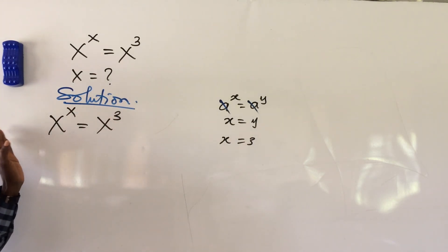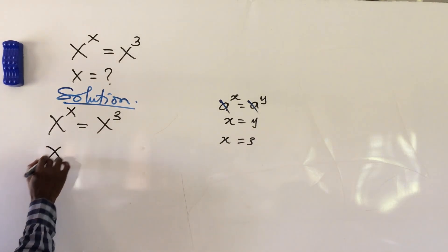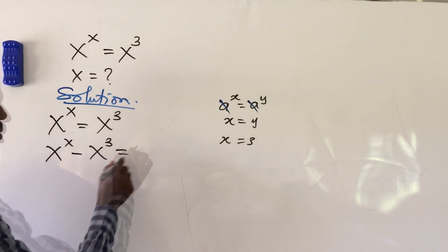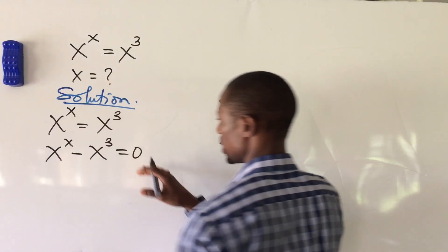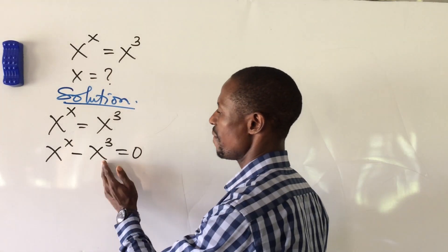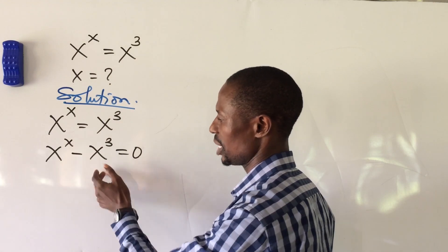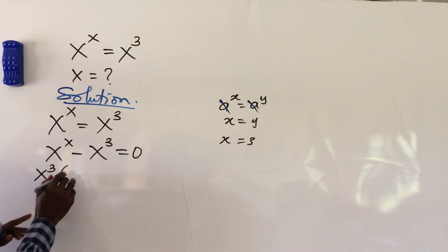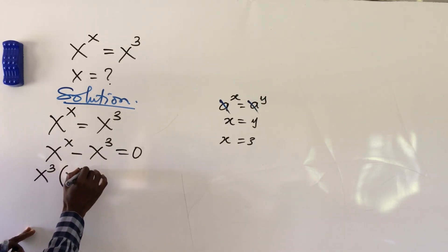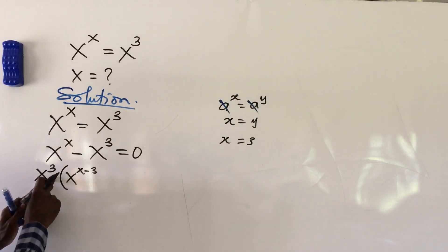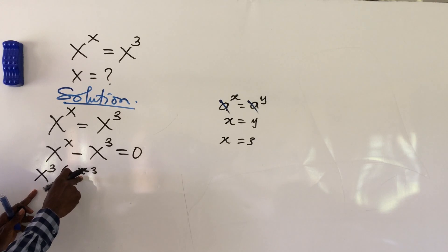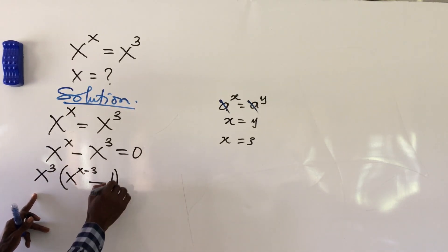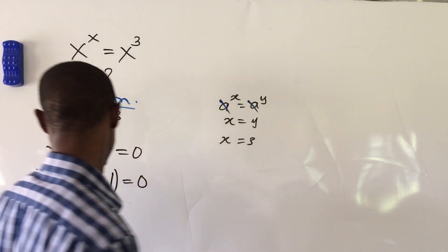We move x to the power of 3 to the left-hand side, giving us x to the power of x minus x to the power of 3 equals zero. Now we factor out x to the power of 3 from the left side, which gives us x to the power of 3 times the bracket x to the power of (x minus 3) minus 1, close bracket, equals zero.